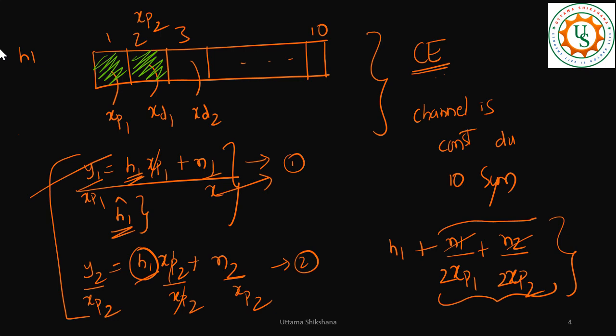Now the thing is it's a trade-off. Now out of 10 symbols I used two symbols to transmit pilots and then remaining data. But if you go for five symbols pilot, five symbols data, your channel estimation will be more good but of course you are transmitting very less data - there is overhead, it is too much.